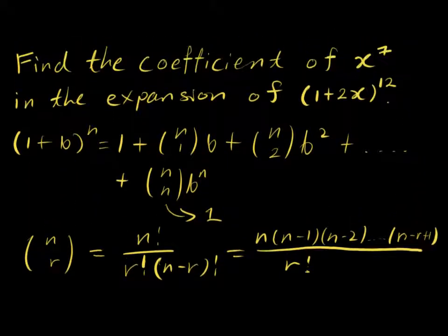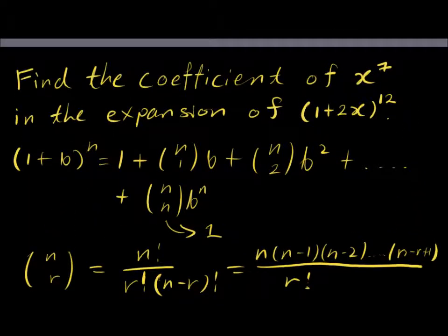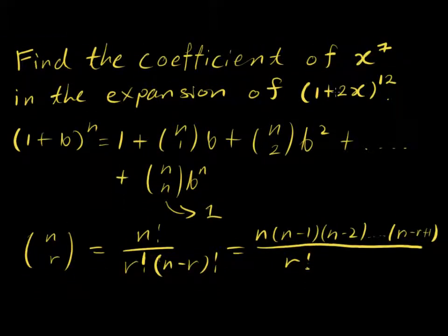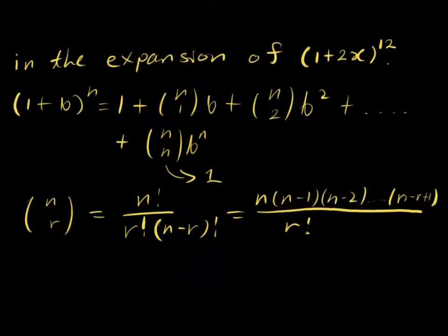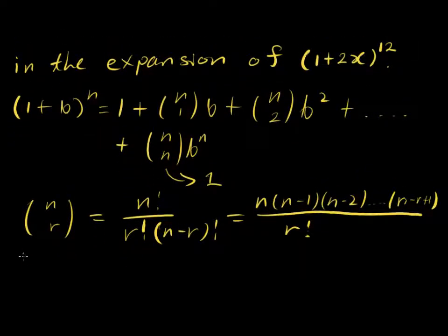So in order to solve this equation here, we need to find the coefficient of x to the power of 7 in the expansion of 1 plus 2x to the power of 12. So in this case here, 2x would be equivalent to the b term here, and 12 would be equivalent to n.